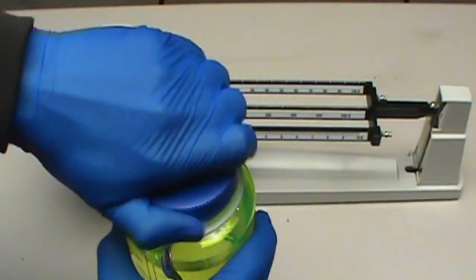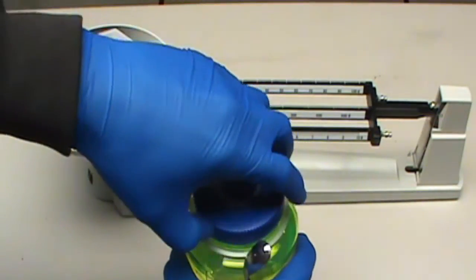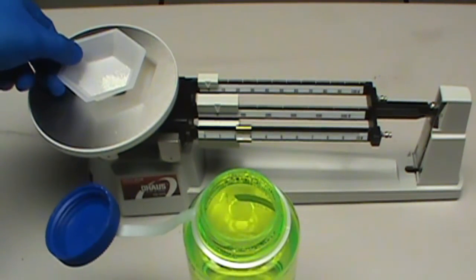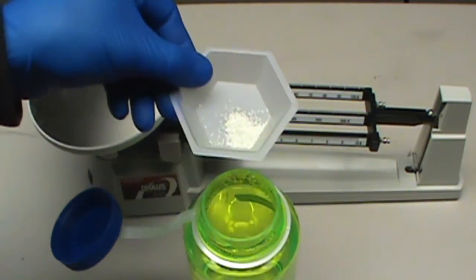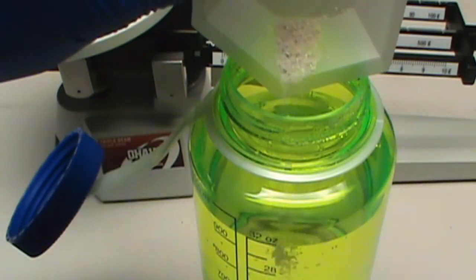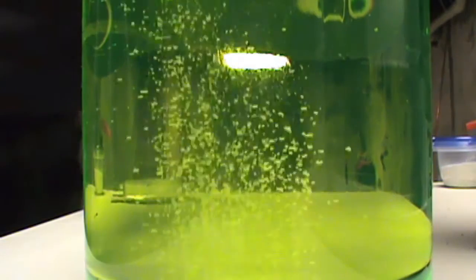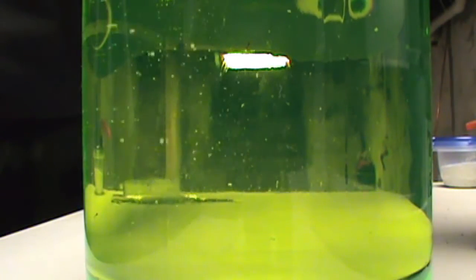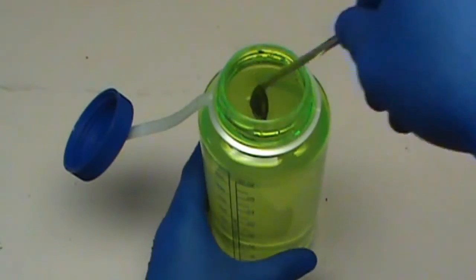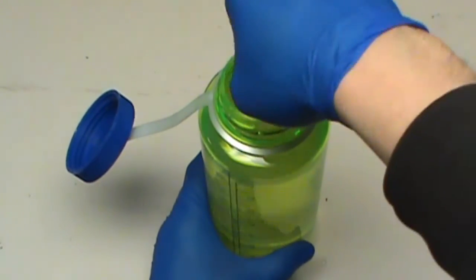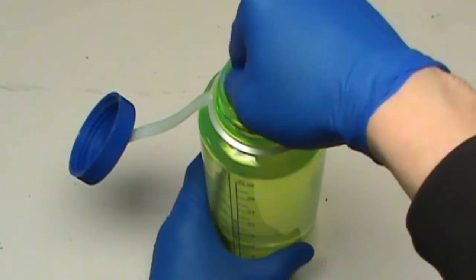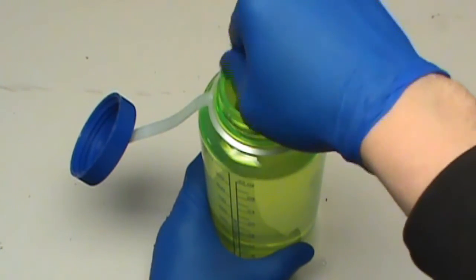So what we're going to do now is we're going to take our one quart of water and we're going to add the calcium hypochlorite to it.